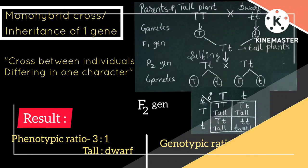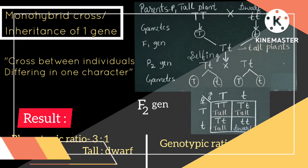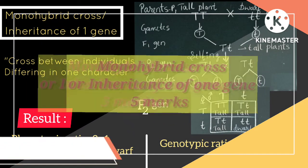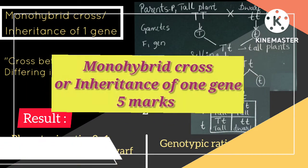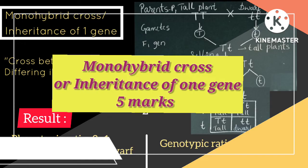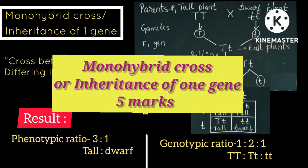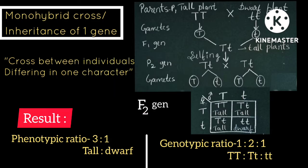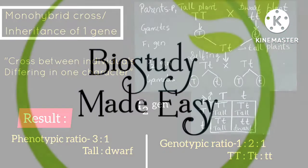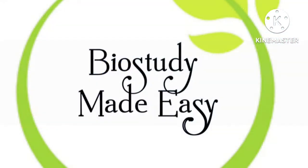In this video, we will study Monohybrid Cross, that is Inheritance of One Gene. This is a 5-mark exam topic and a very important topic of the Principles of Inheritance and Variation chapter.